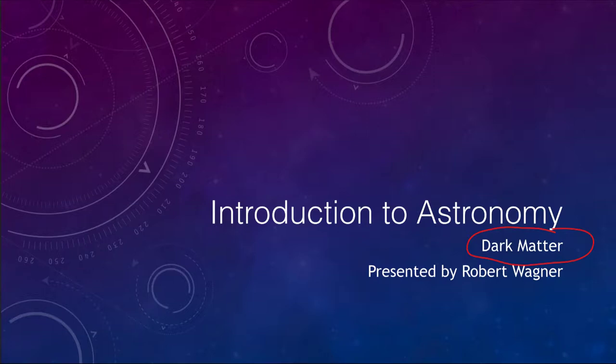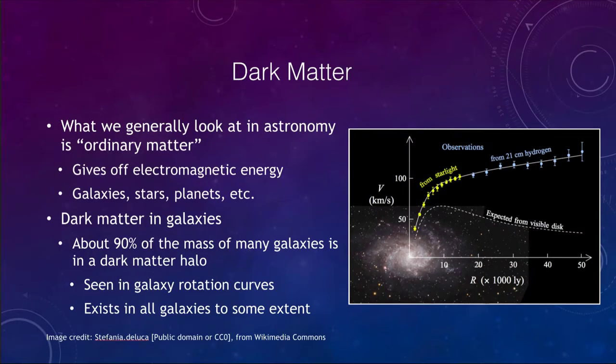Dark matter is just that — it is completely dark. We cannot see anything of it except for its gravitational effect. It gives off no specific types of electromagnetic radiation that we can see. So how do we know that it exists if we can't see it? Well, what we can do is make various kinds of measurements to try to better understand dark matter. Normally, we look at what we call ordinary matter.